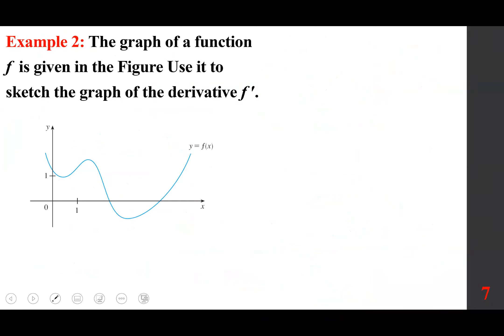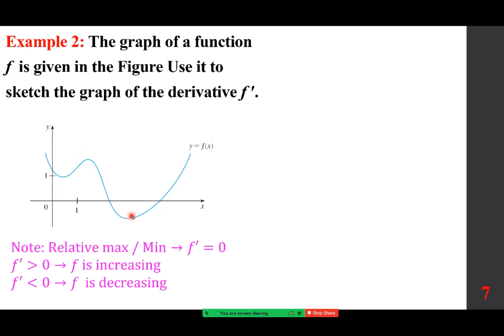The graph of f is given and we want to sketch the graph of f'. A few things we need to know: this is a local min, this is a local max, and this is a local min. When we have a relative maximum or minimum, f' is zero — because you can draw a horizontal tangent line. When f' is positive, f is increasing; when f' is negative, f is decreasing.